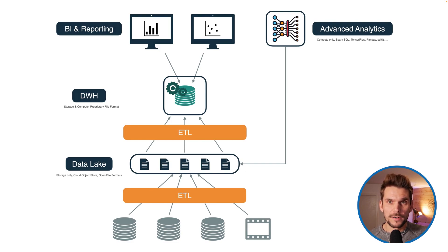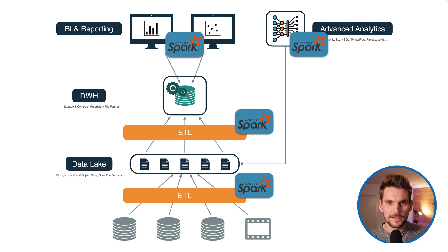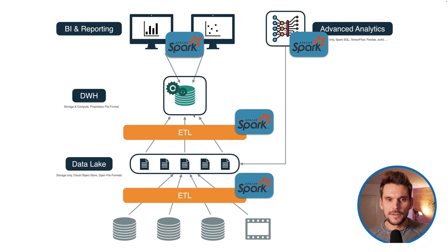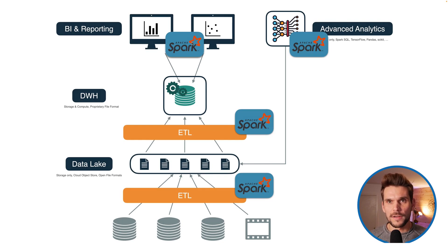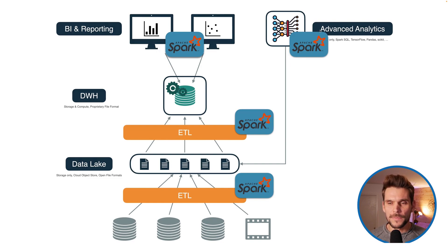Now let's have a look at how Spark fits into this picture. You can see this little bubble containing Spark appear basically everywhere here. We use it in all of the ETL processes to shuffle data around from the data source into the data lake, and then from the data lake into the data warehouse. We can use it on the BI and reporting side to do analytics on structured data, and we can also use it on the advanced analytics side to pre-process data or even to build advanced analytics use cases with itself.